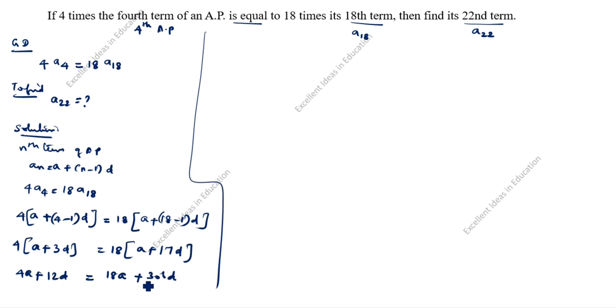Next step, a goes one side, d goes another side. So, 4a minus 18a is equal to 306d minus 12d. 4a minus 18a.